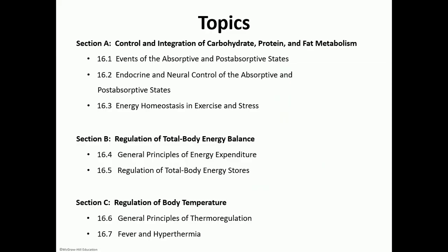These are the topics we're going to be covering — sections A, B, and C. First, how does the body, whether it's the endocrine system or the nervous system, control how all of these metabolic processes interact together, whether it's carb, protein, or fat metabolism. Section B talks about how the body regulates energy intake versus caloric output. Section C talks about regulation of body temperature.